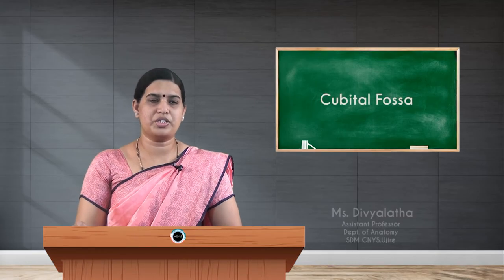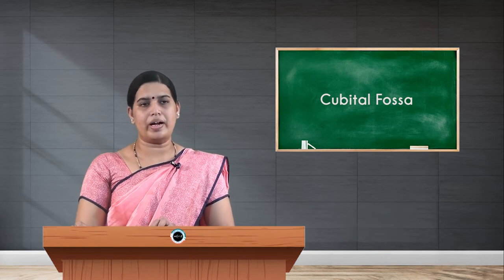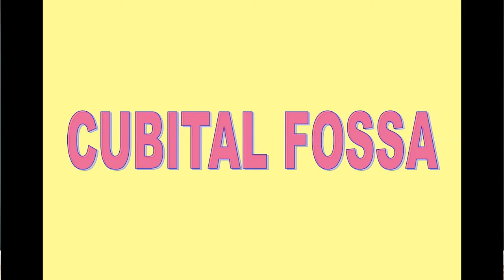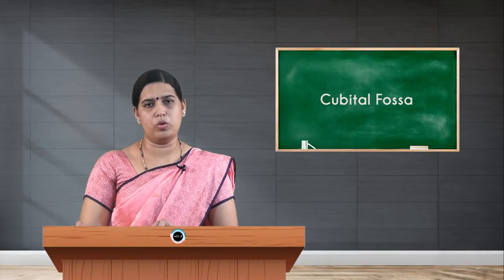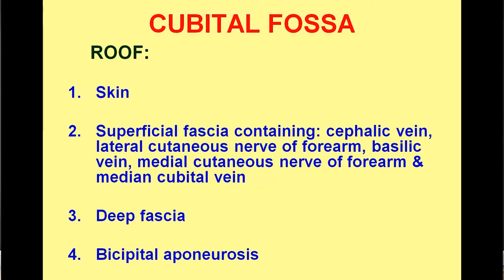Welcome to the session. Today I am going to explain about the cubital fossa. The cubital fossa is situated in the front of the elbow, homologous to the popliteal fossa in the knee. It is an inverted triangular fossa, with the apex directed downward at the meeting point of two important muscles, and the base directed upwards.